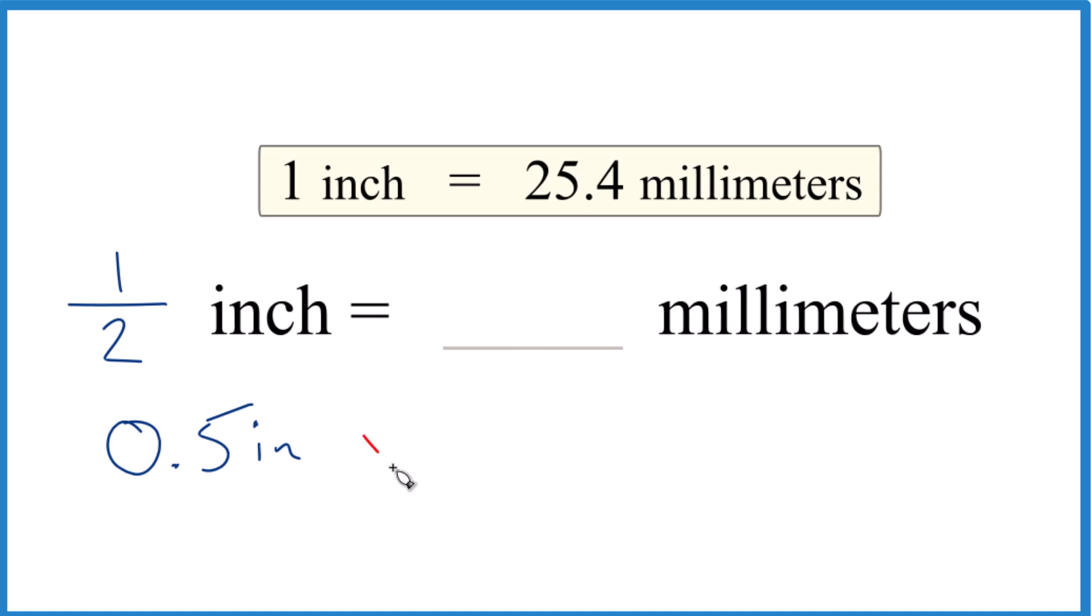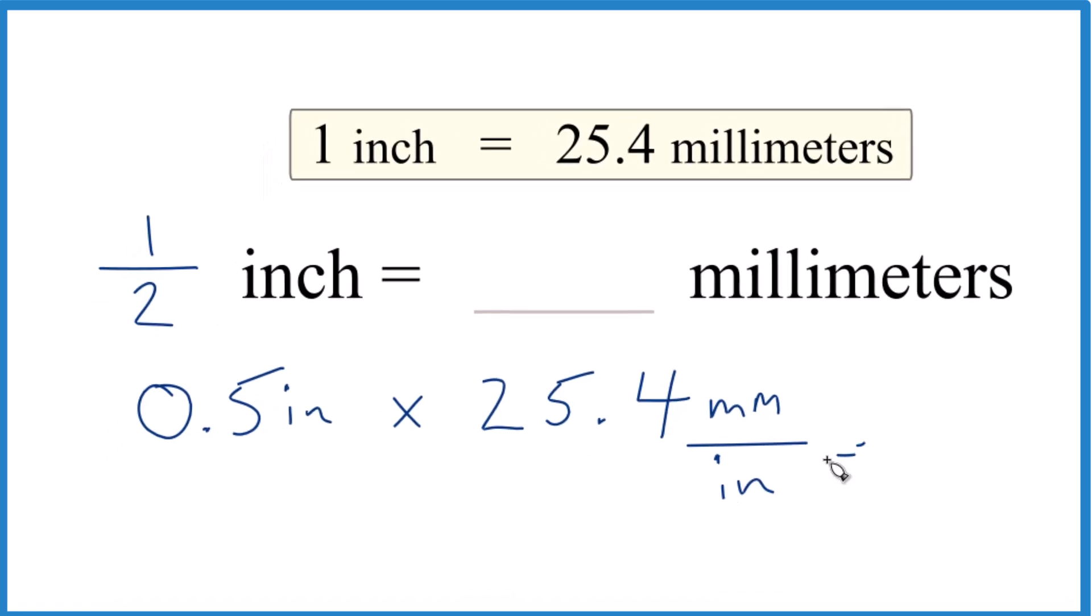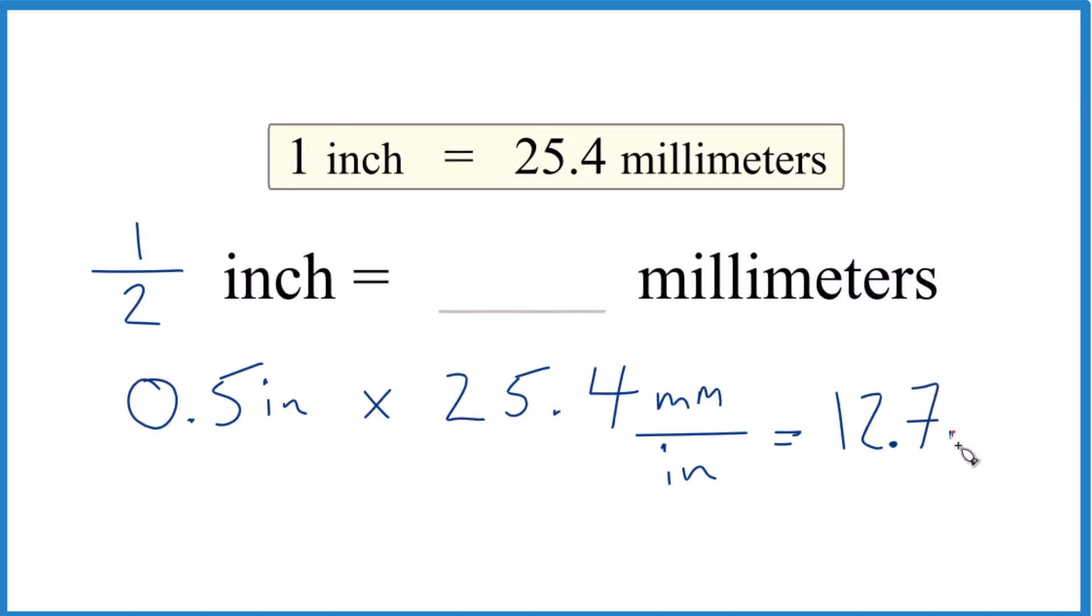We're going to multiply that by our 25.4 millimeters, and that's 25.4 millimeters per inch. When we do that, we end up with 12.7 millimeters.